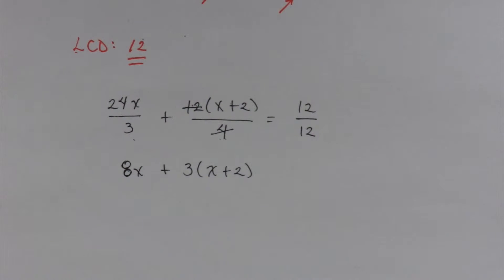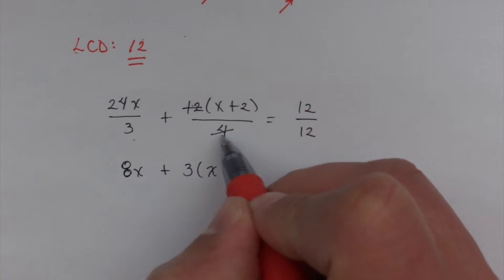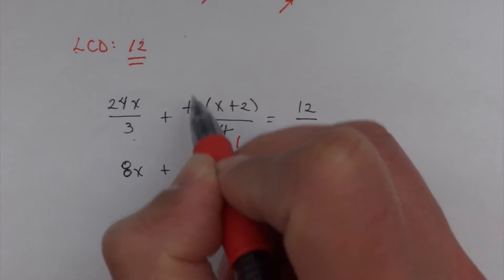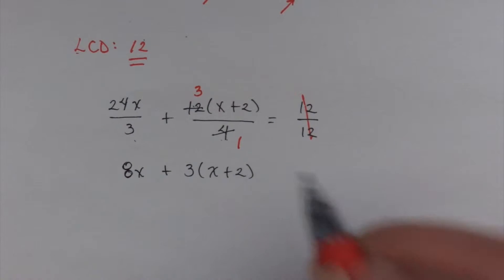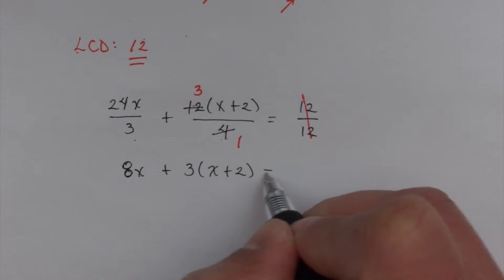So this becomes 3 times the quantity x + 2. And if you want to know how I got that, one number divides both of these, 4. 4 divided by 4 is 1, 12 divided by 4 is 3. And that's how I get my 3 here. And of course, 12 divided by 12 is 1.